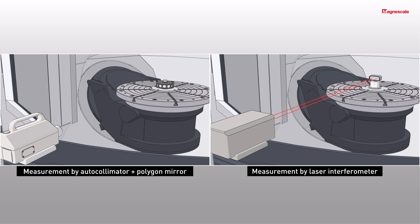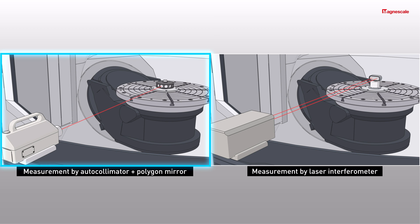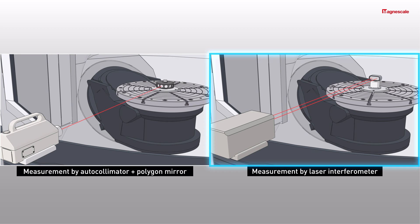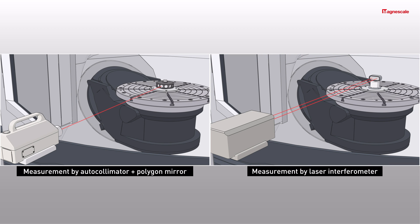In many cases, autocollimator that uses a polygon mirror and a laser interferometer are used for high accuracy measurement. However, the autocollimator can only measure the angle of the polygon mirror, and both are easily affected by the influence of ambient airflow and temperature fluctuations.